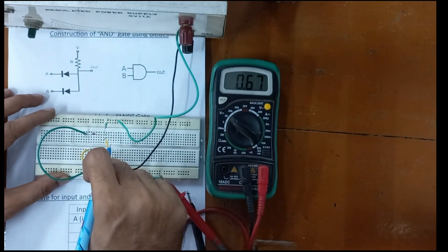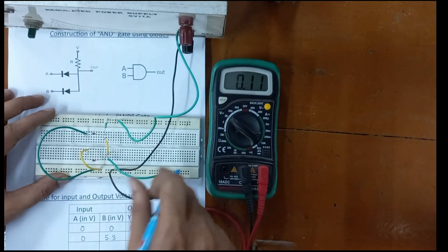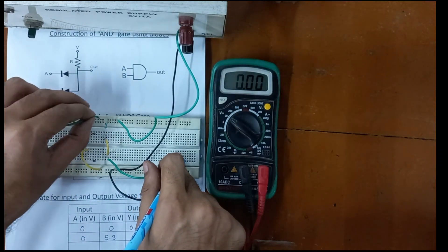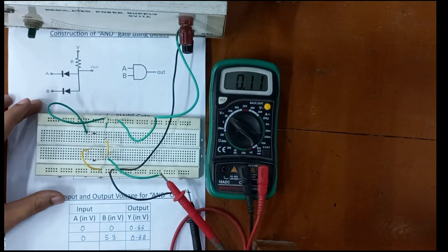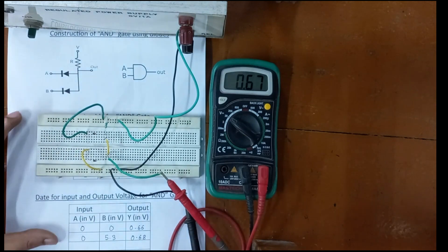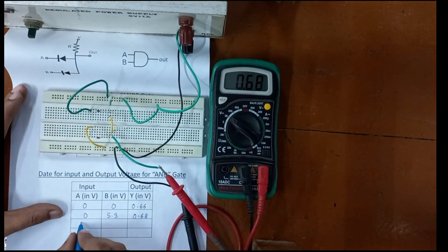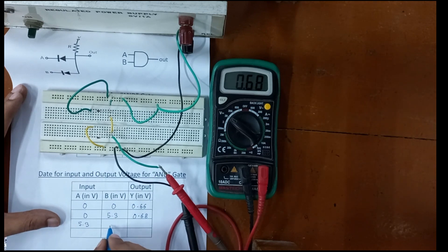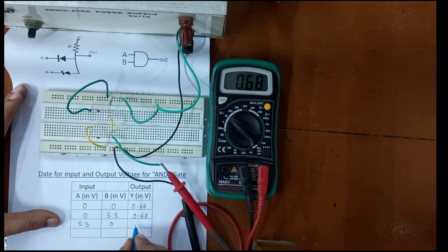Now make B as 0 volt and A as high volt, that is 5.3 volt. In that scenario, look at the output voltage. The output voltage is again approximately 0, so 5.3, 0 and voltage is 0.68.